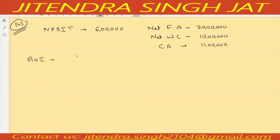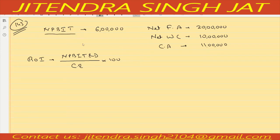Return on investment means we need net profit before interest, tax, and dividend. If dividend is not given or cannot be computed, we take only net profit before interest and tax. The formula is net profit before interest and tax divided by capital employed, multiplied by 100. Capital employed is not given, so we need to compute it.